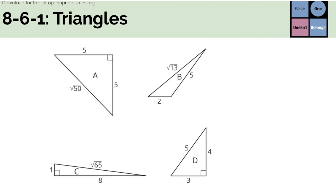As always, you could pick any of these to be the one that doesn't belong, but here are some reasons for each of them. In triangle A, it's the only one with two sides that are the same length. In triangle B, it's the only one that is not a right triangle. In triangle C, this one's a little bit tougher, but you could say it's the only one that has a side length of one, for example. In D, it's the only one where every side has a length that is a rational number.